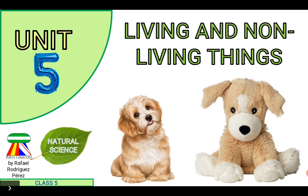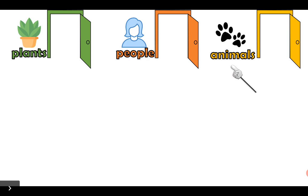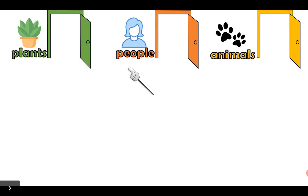Today we are going to learn about the things that living things need. But first we are going to remember this: the classification of living things. Remember that there are 3 types of living things. Plants, people and animals. Can you repeat after me, please? Plants, people and animals.